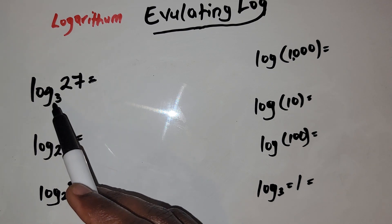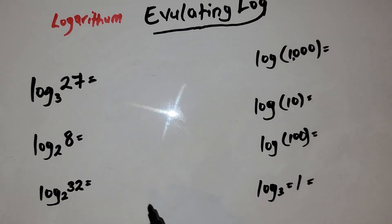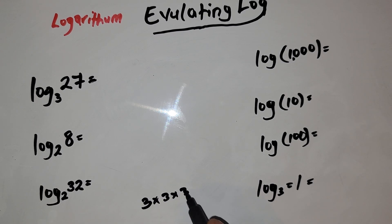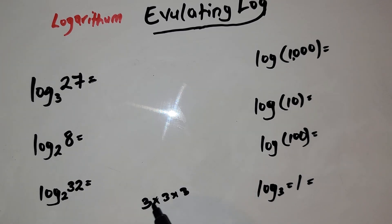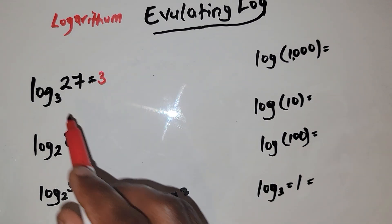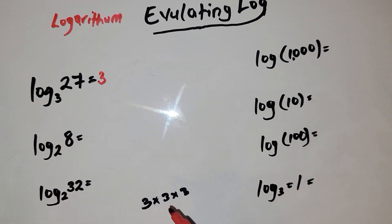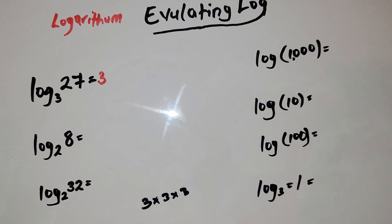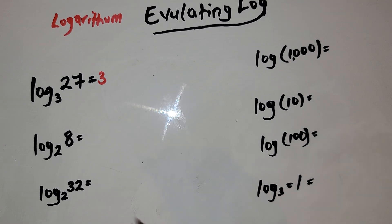27. So we have 3 times 3 times 3 — 3 times 3 is 9, and 9 times 3 is 27. So 3 to the 3rd gives you 27, which means the answer is equal to 3, because 3 raised to the third power is equal to 27.